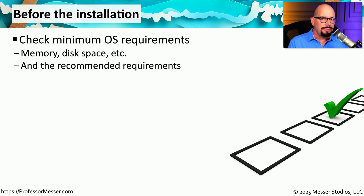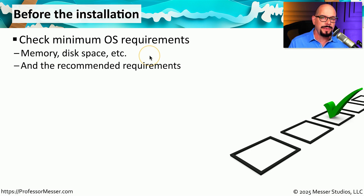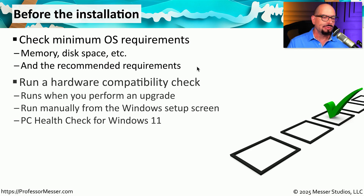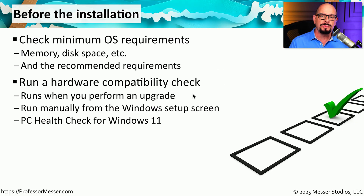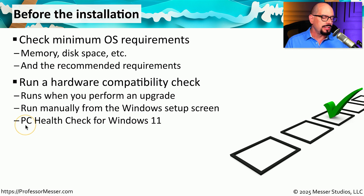If you're moving from one operating system version to another, it's a good idea to check the requirements for that OS — verify that your system has enough memory, enough drive space, and can support all the features of the new operating system. There's usually a list of recommended requirements in the OS documentation. Microsoft includes a hardware compatibility check for this purpose; for Windows 11, Microsoft refers to this application as the PC Health Check.